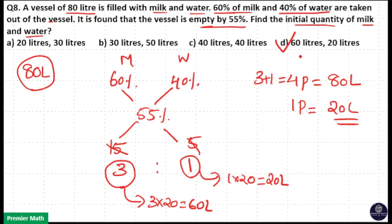Here option D is your answer. 60 liter of milk and 20 liter of water were present in the initial quantity.